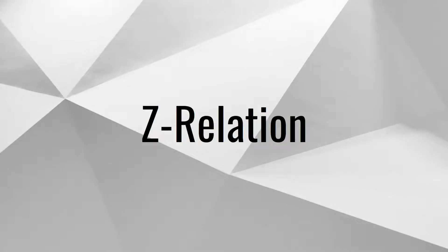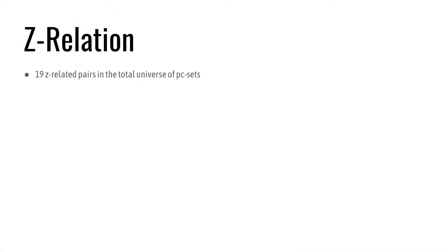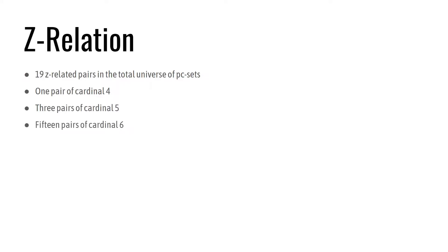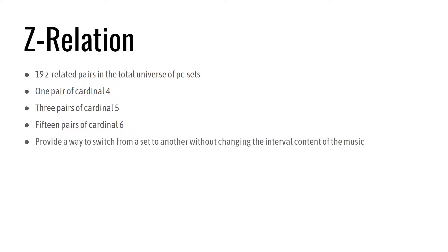The letter Z has no special meaning. It's only used to identify this special type of relationship, an invention of Forte himself. There are 19 Z-related pairs in the total universe of PC sets. In addition to the pair of cardinal 4, there are three pairs of cardinal 5 and 15 pairs of cardinal 6. A Z-related pair provides a way to switch from a set to another without changing the interval content of the music. It would be like having another set of pitches that produce the same intervals as a major chord but don't form a major chord, which we all know is not possible.